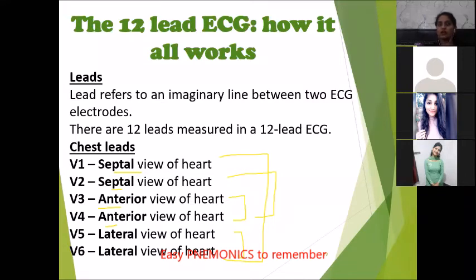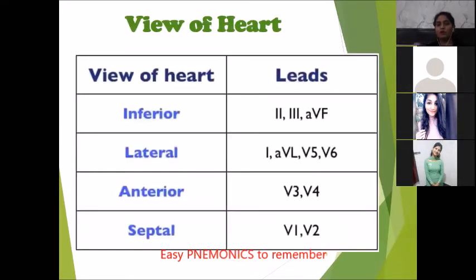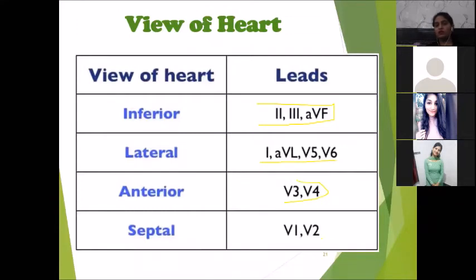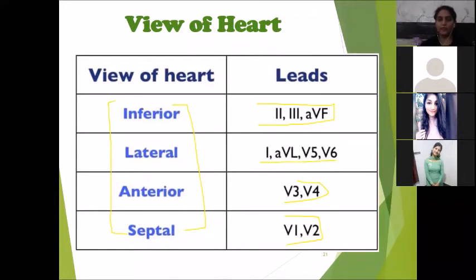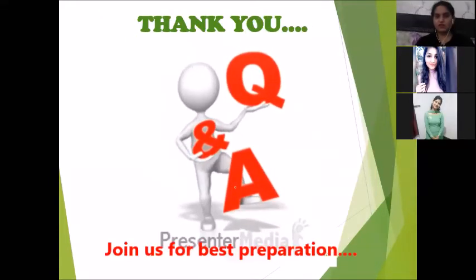Using the mnemonic ILAS — Inferior, Lateral, Anterior, Septal — we can remember the lead groupings. Inferior leads are Lead 2, Lead 3, and AVF. Lateral leads are Lead 1, AVL, V5, and V6. Anterior leads are V3 and V4. Septal leads are V1 and V2. These represent the different views of the heart provided by electrodes placed on the patient's body.